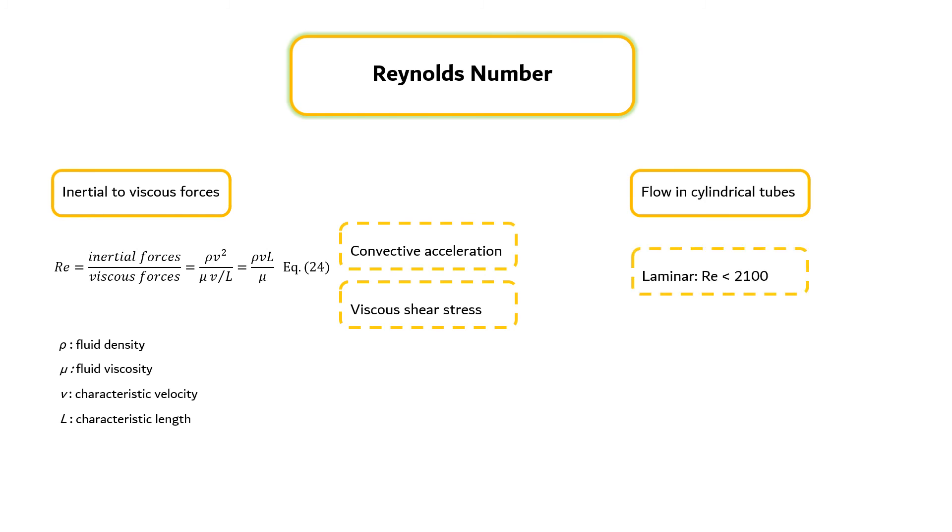For flow in cylindrical tubes, flow is always laminar for Reynolds number less than 2,100. Typically, turbulent flow begins around a Reynolds number of 4,000 and is sensitive to local roughness on the inner walls of the cylinder.